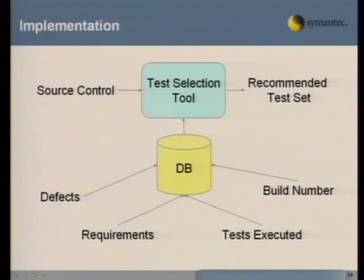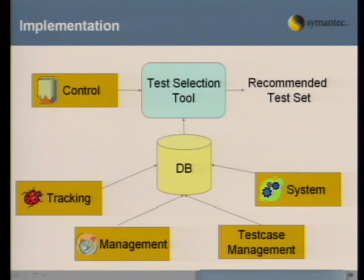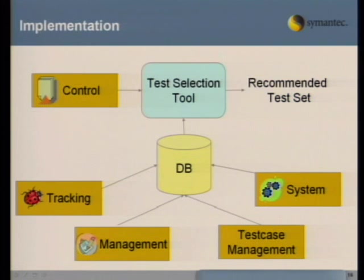For implementation, this is the basic metadata you should pull in to make these associations. You should integrate the tools you're already using — your change control systems, defect tracking systems, requirements management systems, test case management, and build system. It's not necessarily easy to integrate all these systems, especially if using third-party software or something hosted elsewhere without direct programmatic access. But the more data you have to mine, the better test selections you can make.